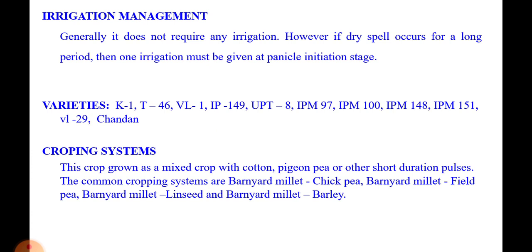Regarding cropping systems: this crop is grown as a mixed crop with cotton, pigeon pea, and other short duration pulses. The common cropping systems are barnyard millet–chickpea, barnyard millet–field pea, barnyard millet–linseed, and barnyard millet–barley.